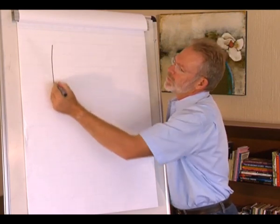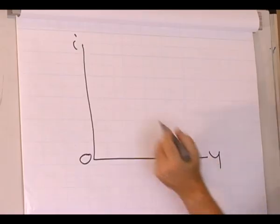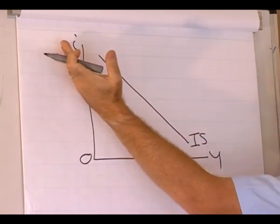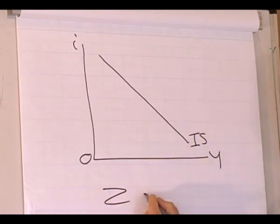Let's focus on the IS curve. The IS curve shows all the combinations of interest rate and level of output where the demand for goods and services is equal to the level of output.